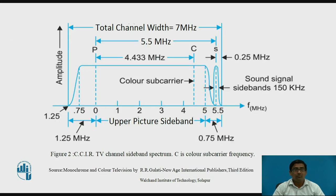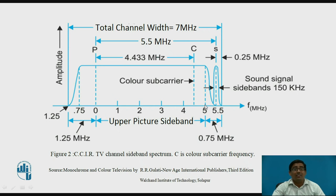Now we study examples from different countries. In India, the CCIR TV channel sideband spectrum is used, where C is the color subcarrier frequency. The graph of amplitude versus frequency shows the picture starting from zero frequency up to 5.5 MHz, the color subcarrier between 4 to 5 MHz, and the sound carrier at 5.5 MHz. The sound signal sideband requires 150 kHz. The total channel width with vestigial sideband in India is 7 MHz, with a lower sideband of 1.25 MHz.